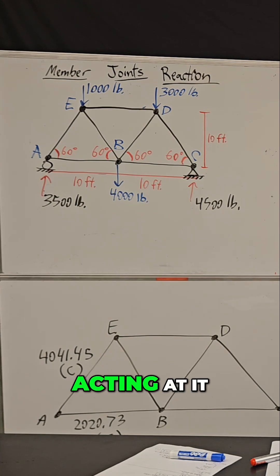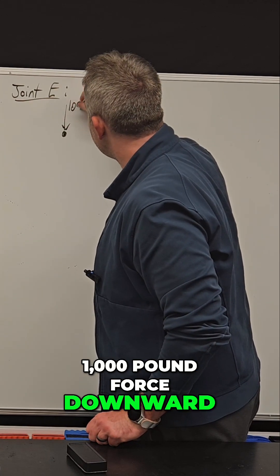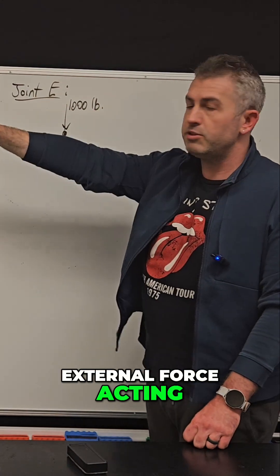If you look at joint E, I'm going to draw all the forces acting at it. There is a 1000 pound force downward. That was the external force acting directly at joint E.